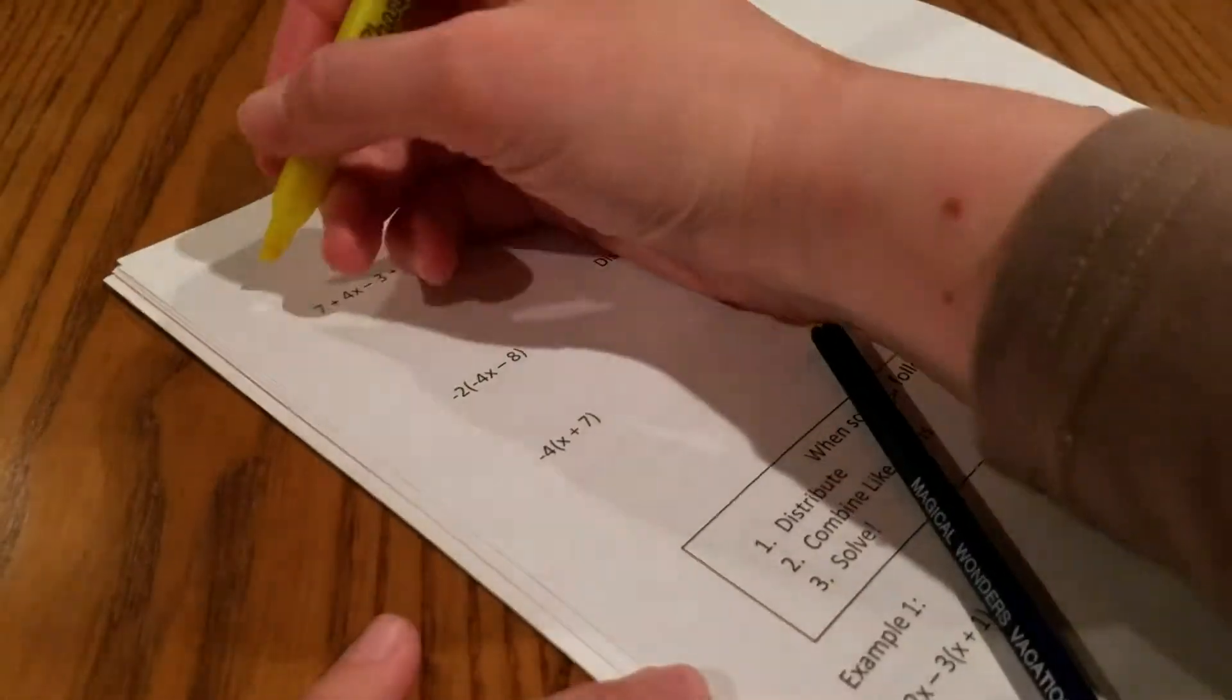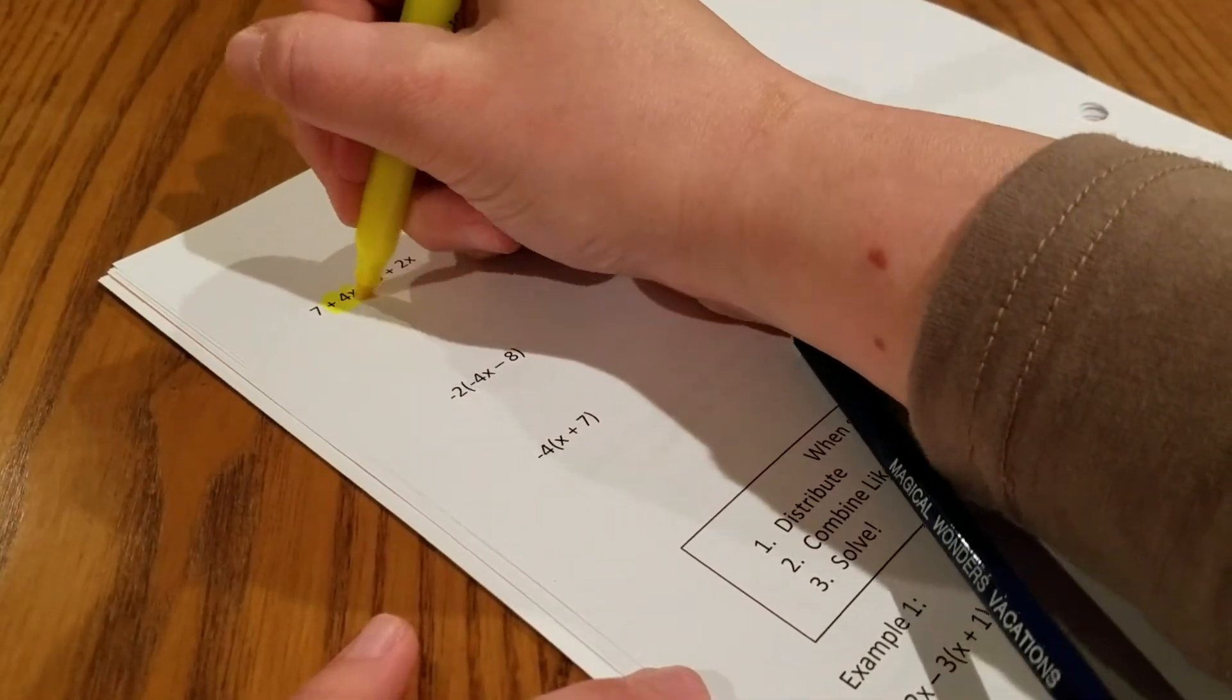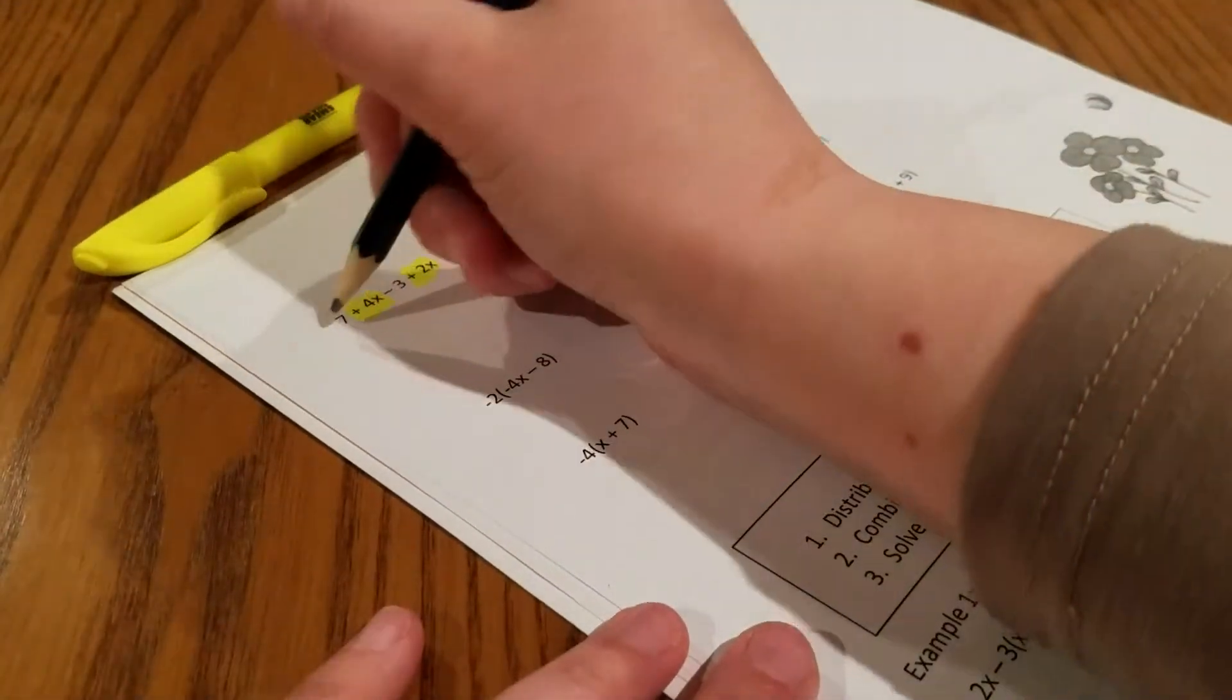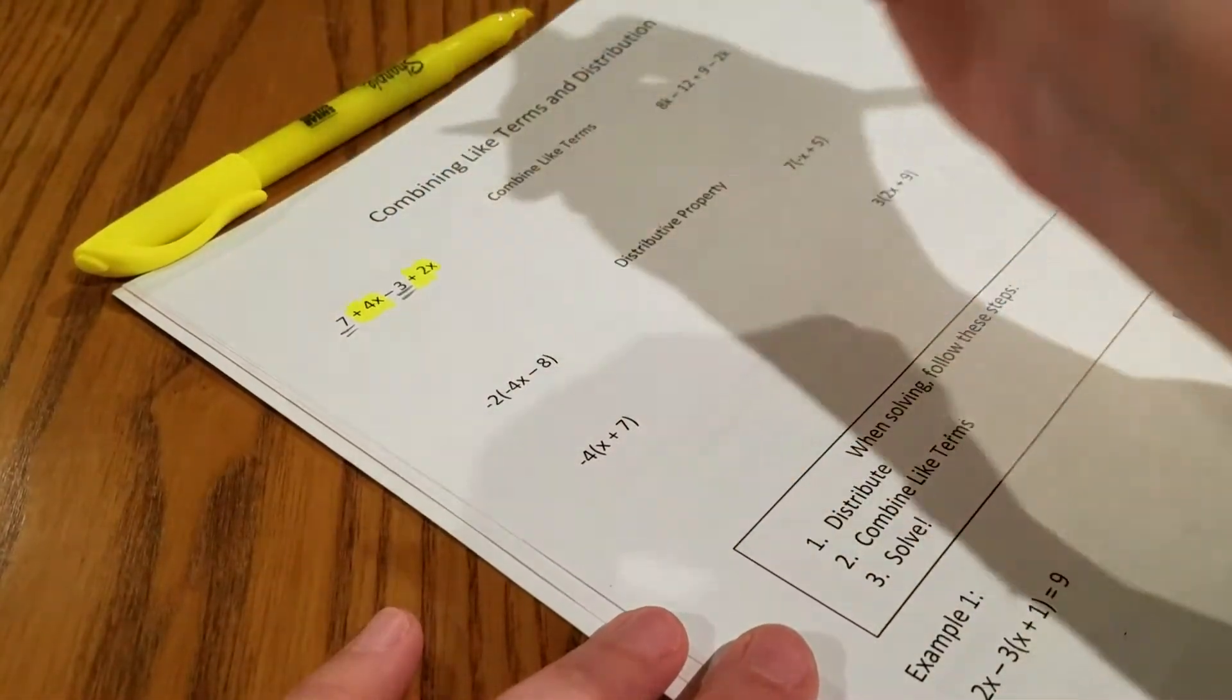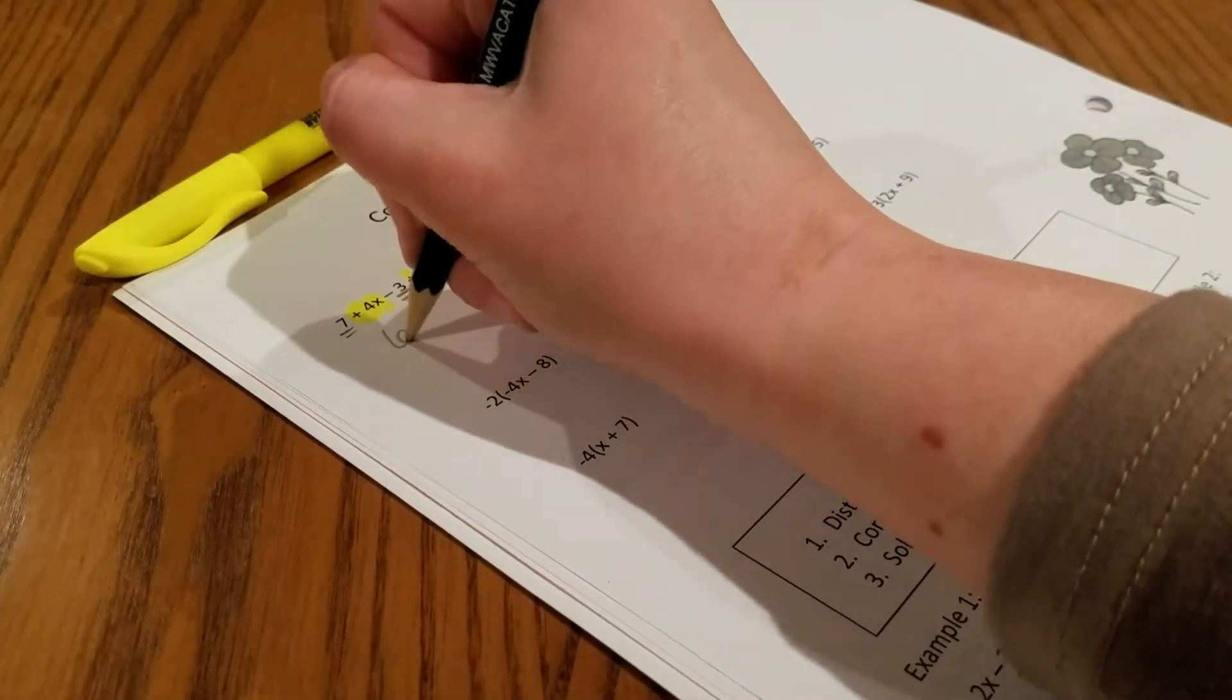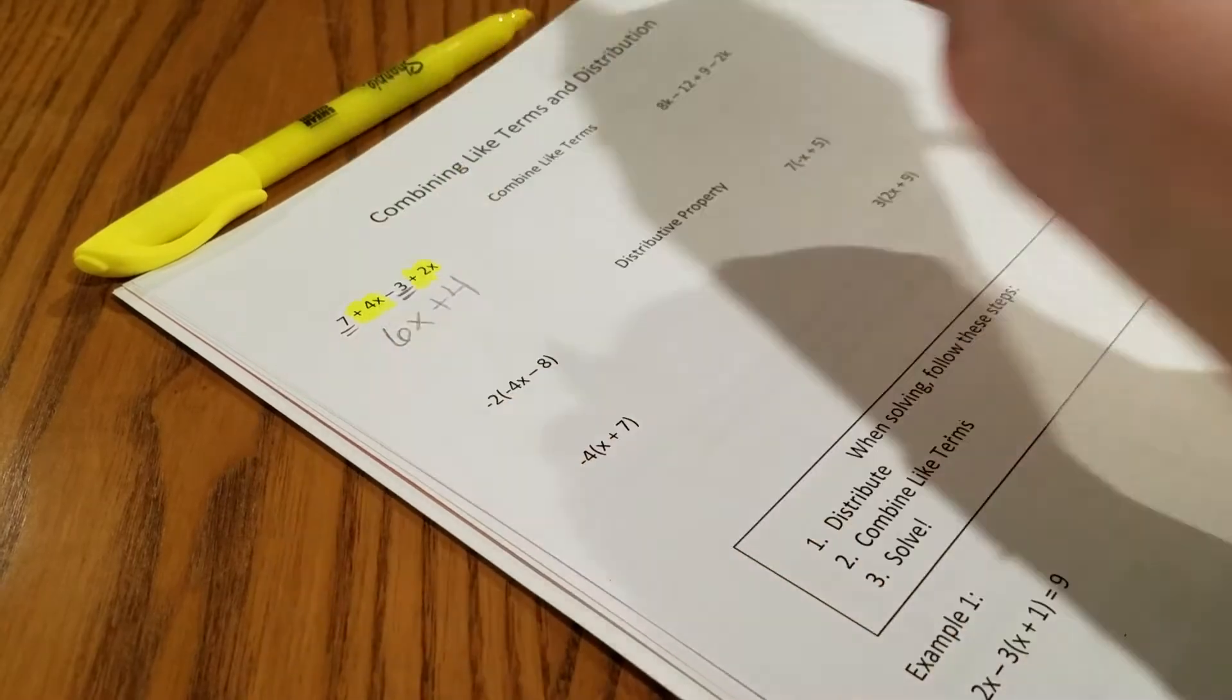So real quick to refresh combining like terms. We have all of our x terms, plus 4x and plus 2x. And then we have the constants, the plain old numbers, the 7 and the negative 3. Remember you should always write it with x's first, so this would be 6x plus 4.